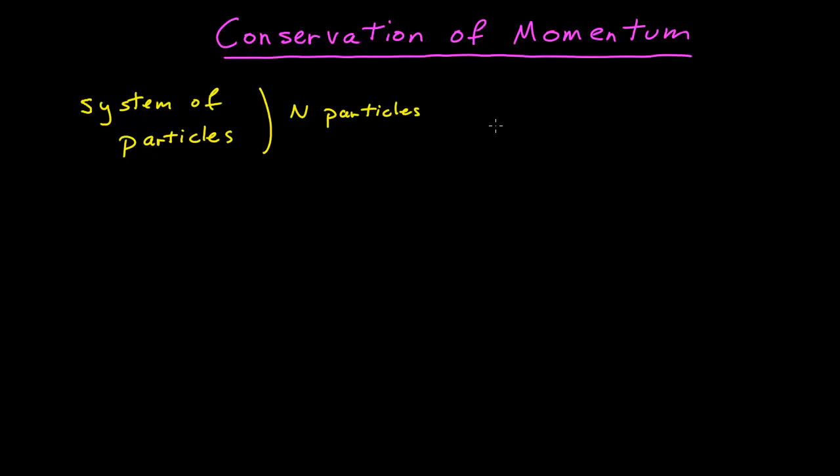If I have N particles, then I can define the total momentum, and P_tot to tell me that's the total momentum, is the vector sum, i equals 1 to N, of all the momenta of all the individual particles. So this is the momentum of particle 1, plus the momentum of particle 2, plus the momentum of particle 3, dot dot dot, till I get to the last particle. So that's my system of particles, and I can define my total momentum.